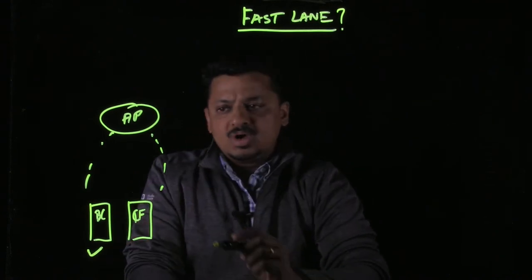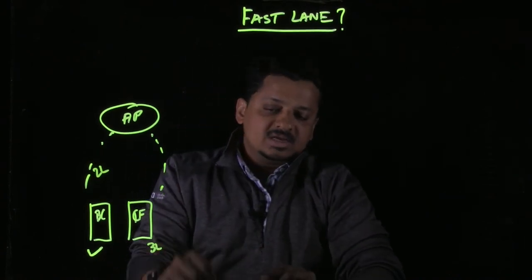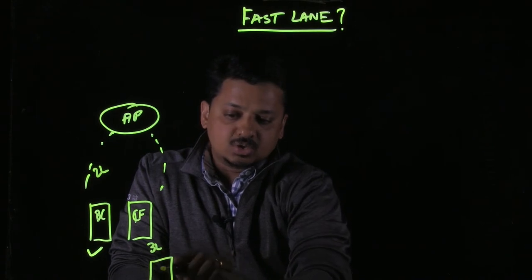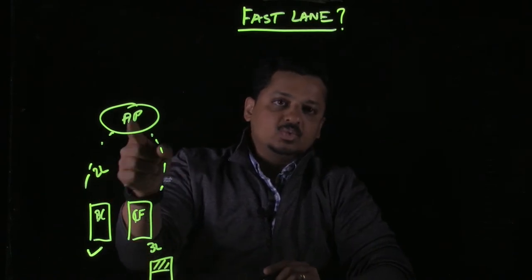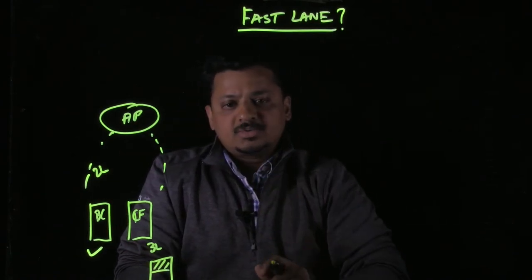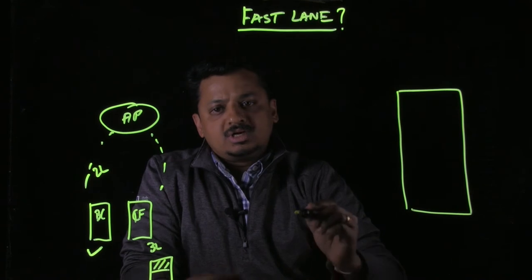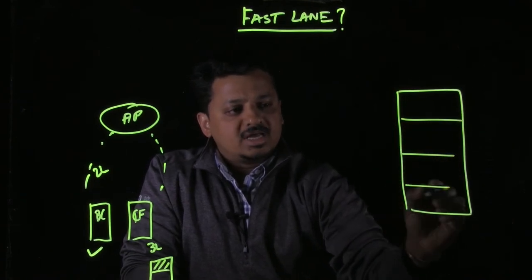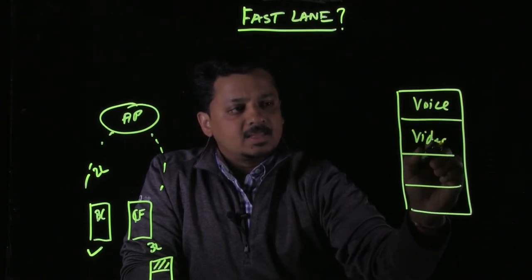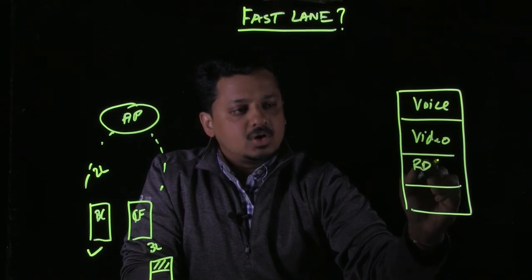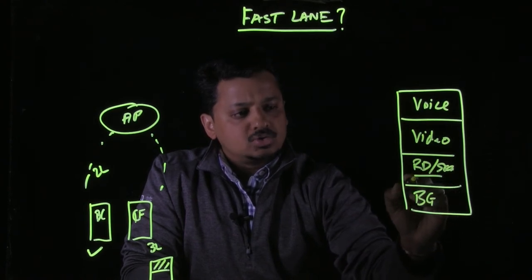Fastlane works at two levels: one is at Layer 2 and the second is at Layer 3. At Layer 3, it is up to the application to notify what type of traffic it wants to mark, and that traffic will get higher priority in the network. Typically you would have four types of traffic: voice, video, real-time data or signaling, and background. The third type is also known as best effort.